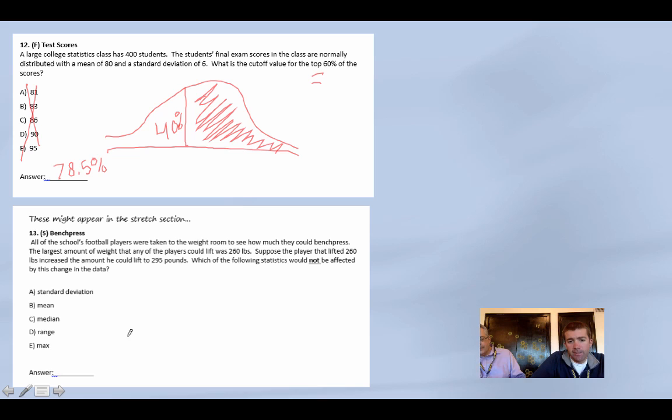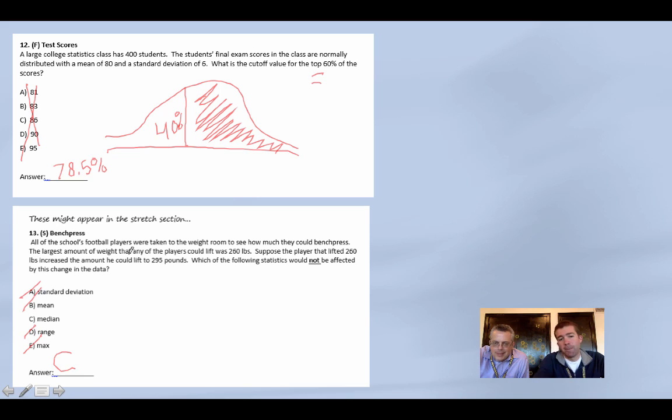All of the school's football players take them to the weight room and see what they could bench press. Largest amount of weight any player could lift was 260 pounds. Suppose the player that lifted 260 pounds increased his amount of lift to 295. Which of the following instances would not be. So we are increasing, I hope he's not juicing, the top score. So if we increase the top score, which one of these would not be affected? Standard deviation would be affected because it would get more spread out. Cross that baby out. The mean would go up because our data gets higher. The range has the max in it, and if we make the max bigger, the range gets bigger. And of course, that is the max. So we're left with C, the median. Which we should remember from last unit.